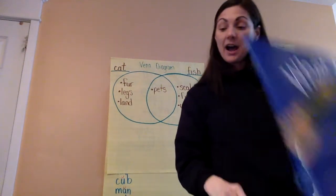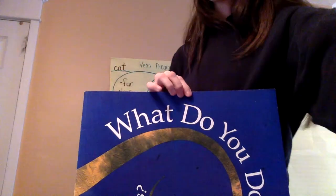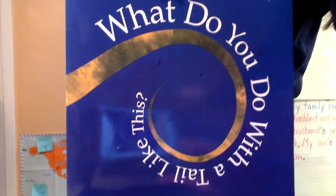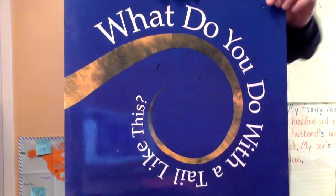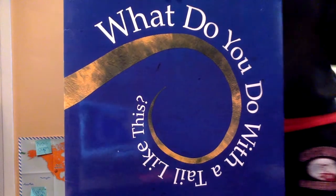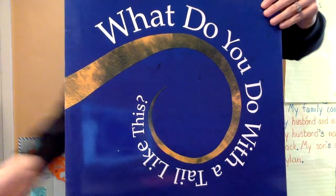So today we're going to read a couple pages from 'What Do You Do With a Tale Like This?' And then we'll do a We Do - a Venn Diagram - comparing two of the animals that we've read about in the story.